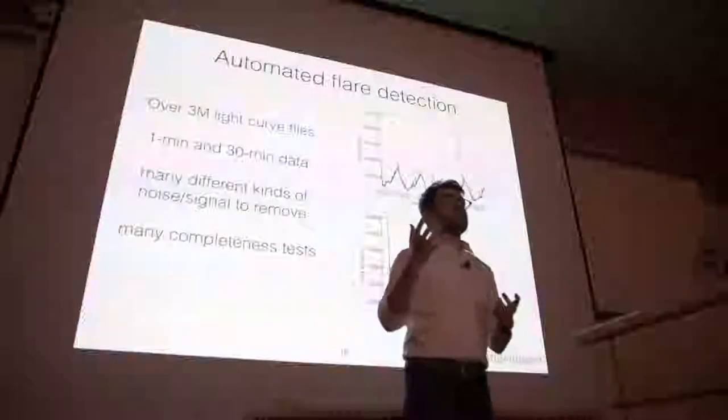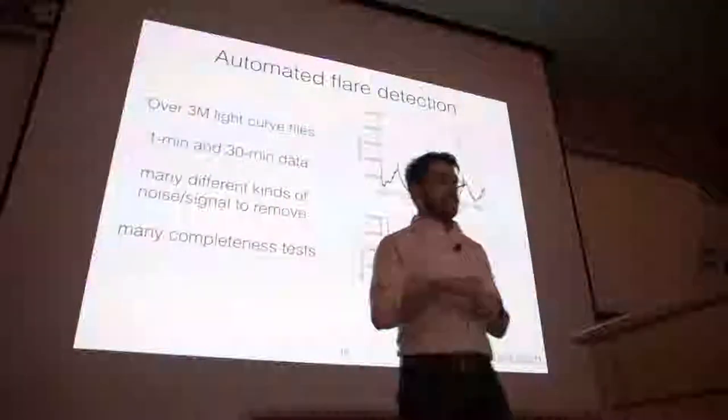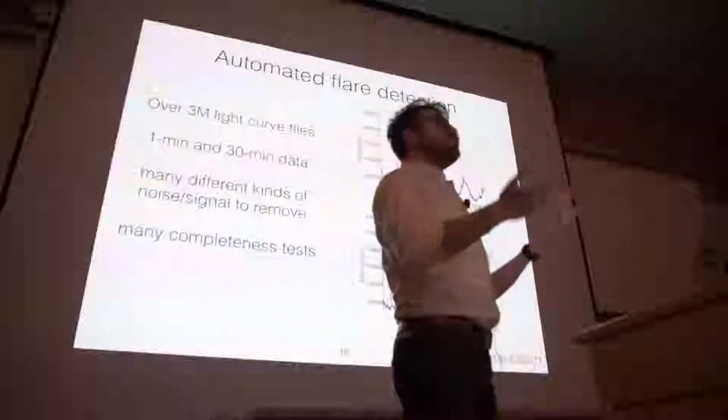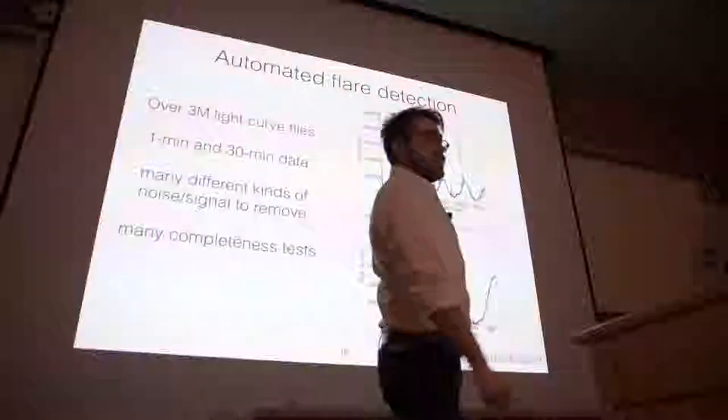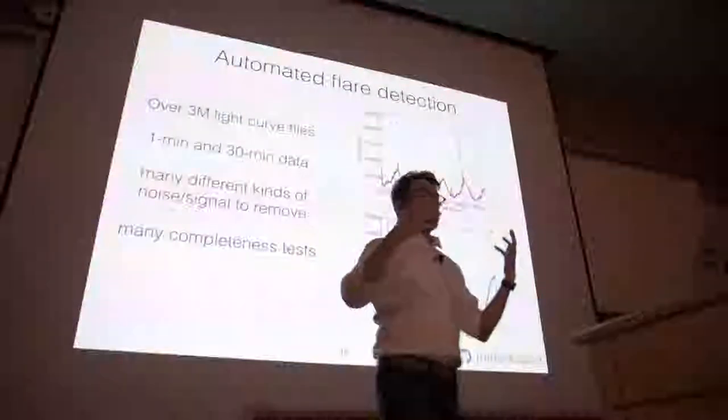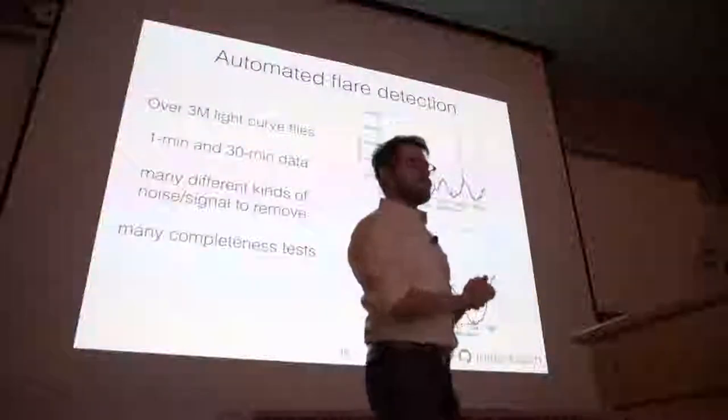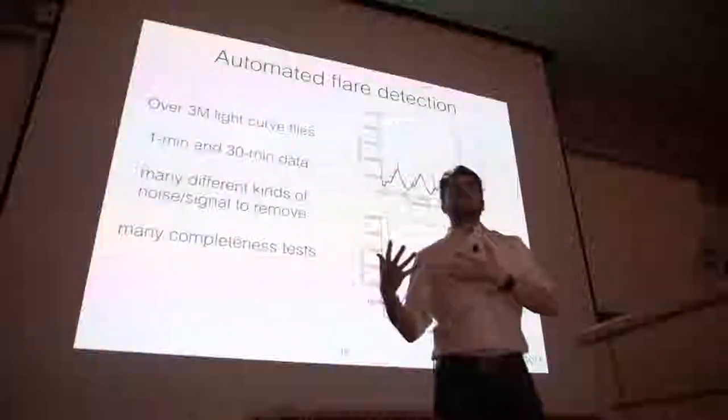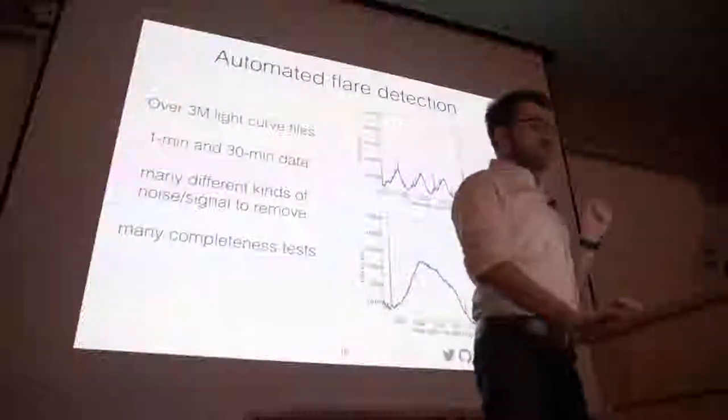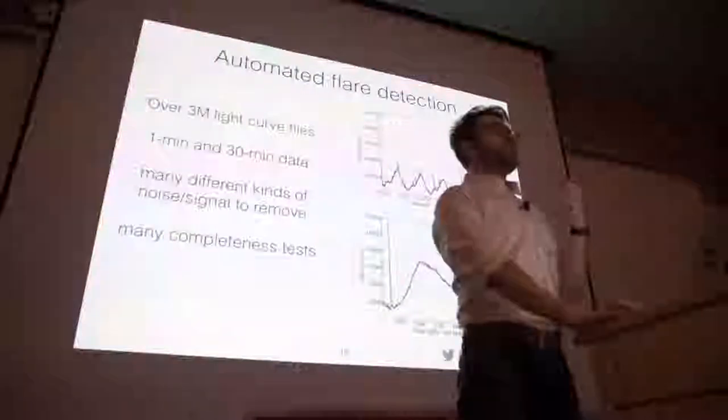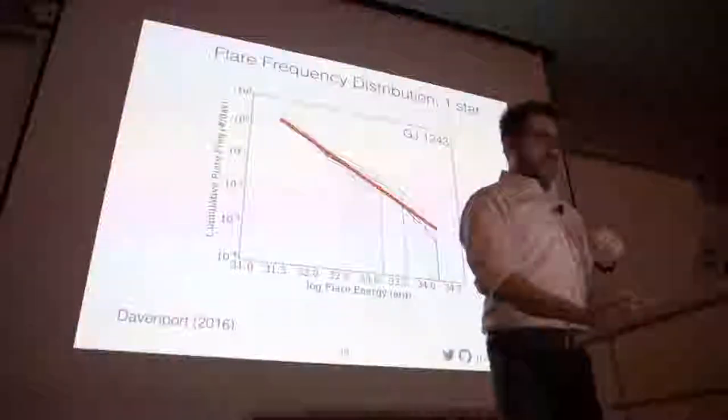The goal was to find all the flares in all the stars. We searched through all of the light curves from Kepler, something like 200,000 stars, both the one minute and the 30 minute data. And the biggest effort, of course, is removing all of the garbage.